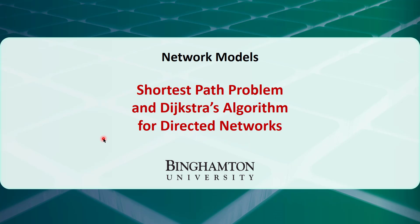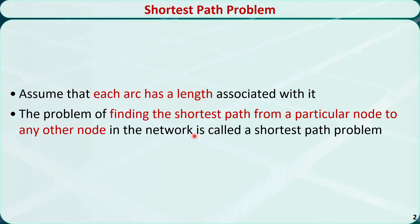In this video, I will talk about how to solve the shortest path problem using Dijkstra's algorithm for directed networks. We assume that each arc in the network has a length associated with it. Suppose we start from a particular node. The problem of finding the shortest path, or the path with the minimum length from this node to any other node in the network, is called a shortest path problem.